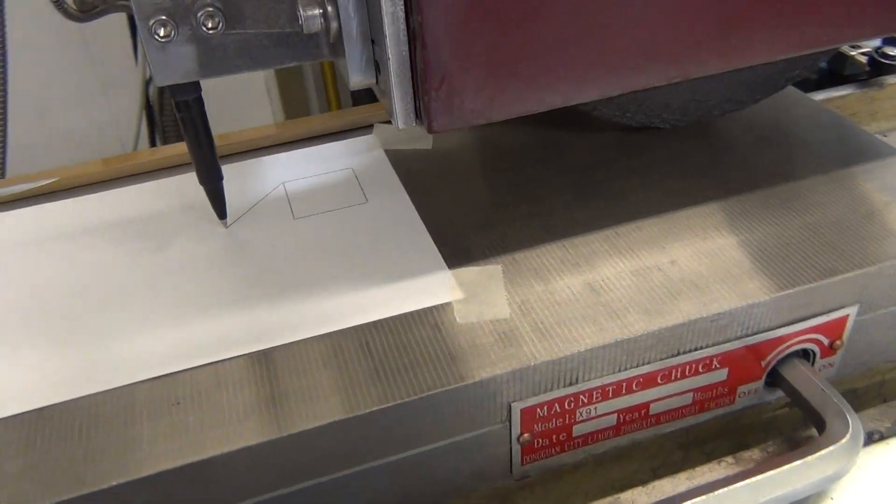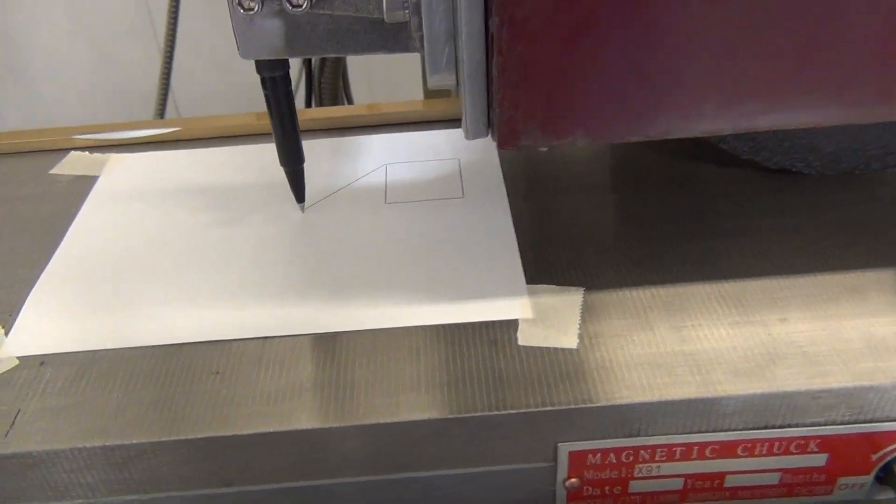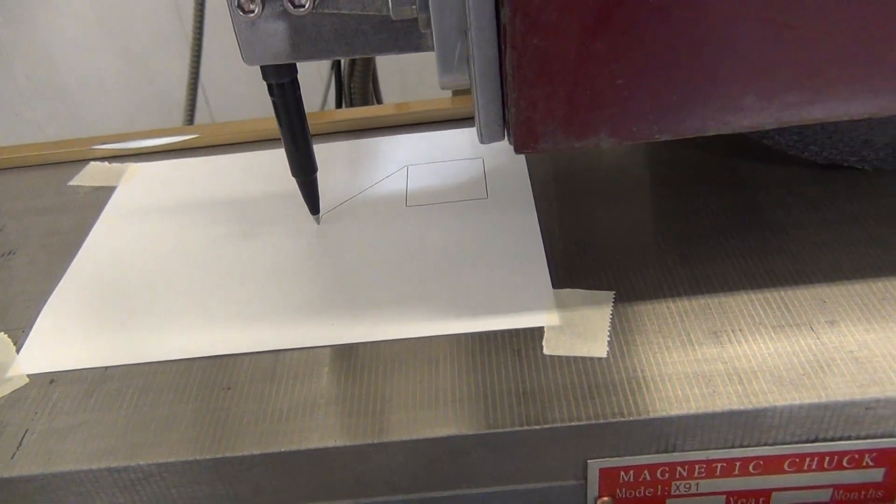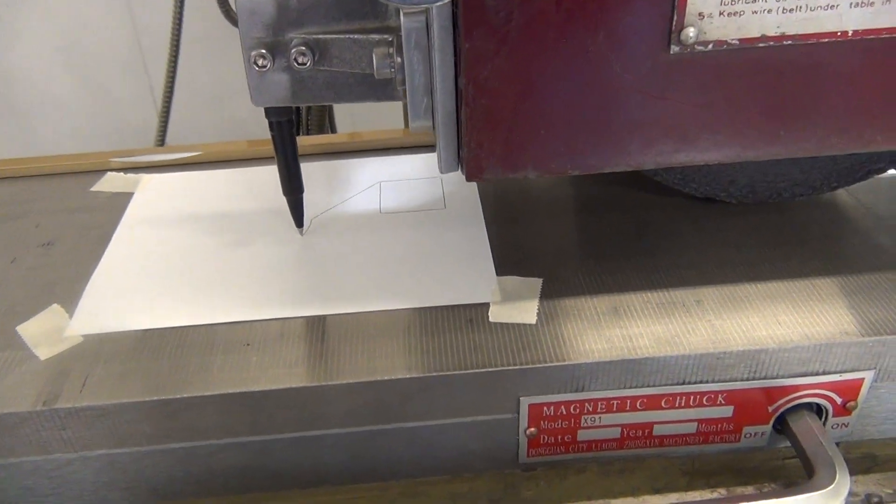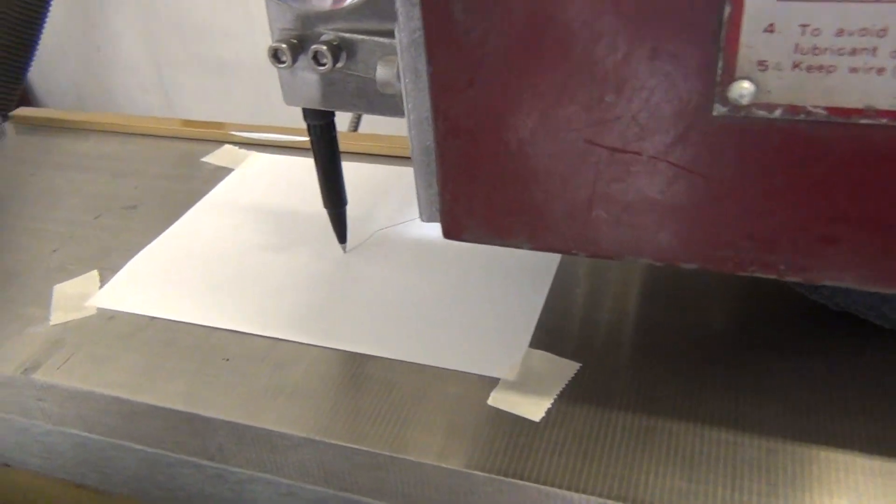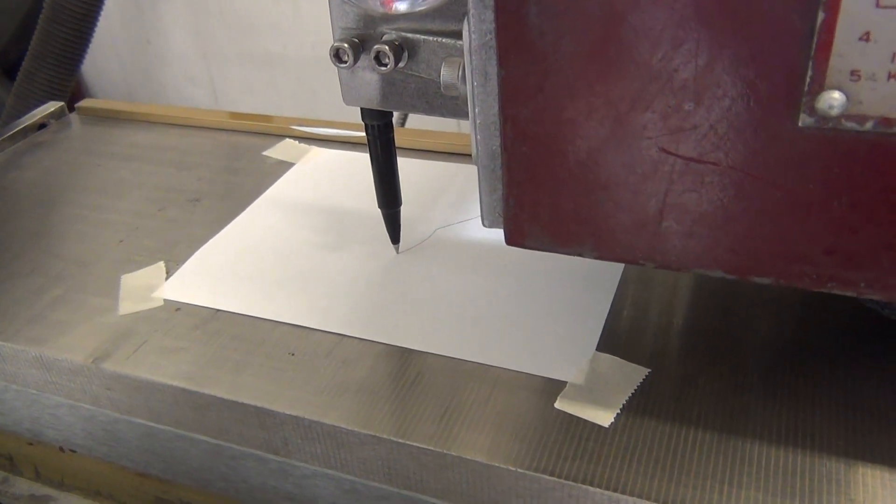Here's the diagonal motion. So that's a 45-degree line. And now it's doing the coordinated both axes to draw a circle, both axes at the same time.